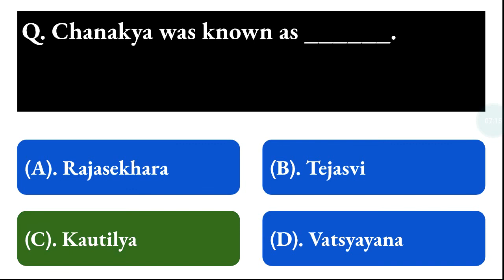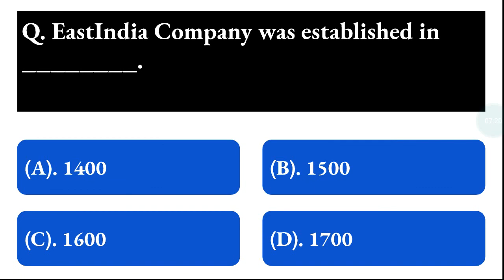Next question: the East India Company was established in — option A: 1400, option B: 1500, option C: 1600, option D: 1700. The correct answer is option C, that is 1600.